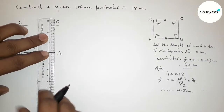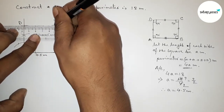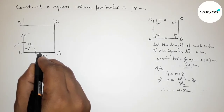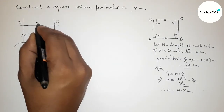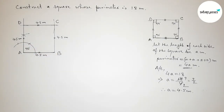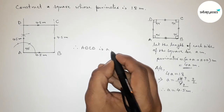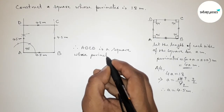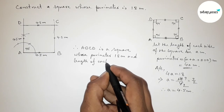Joining line BC, then joining side CD to get square ABCD. All sides are equal at 4.5 centimeters. Therefore ABCD is a square whose perimeter equals 18 centimeters and the length of each side equals 4.5 centimeters.